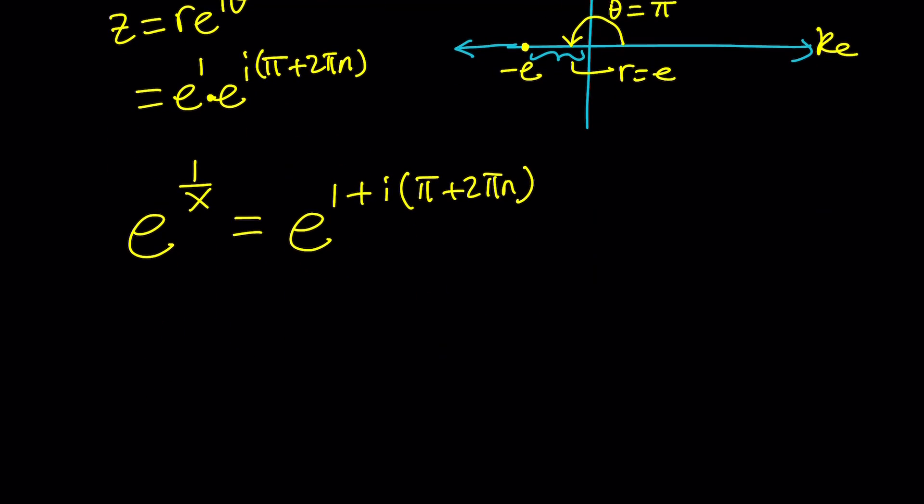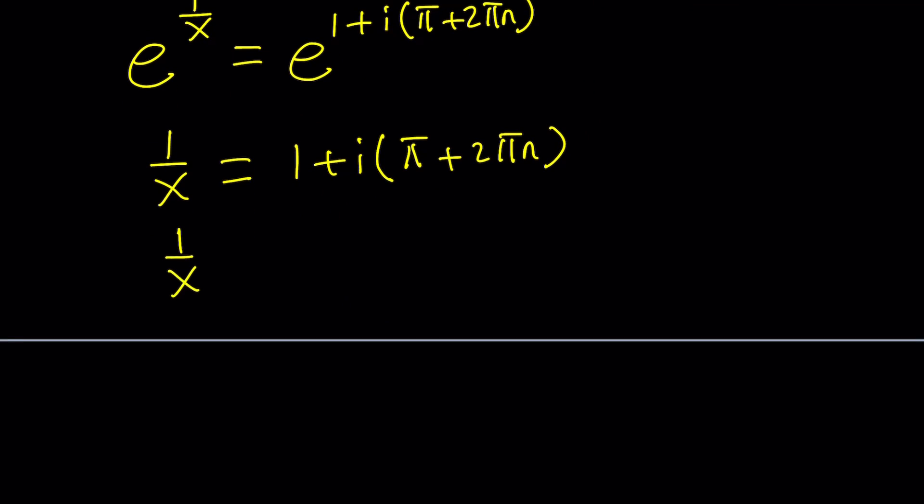Now we can go ahead and do the natural log on both sides. And when we do we're basically going to be getting 1 over x equals 1 plus i multiplied by pi plus 2 pi n. And we're going to be solving for x. Let's go ahead and factor this a little bit. Here we can actually take out a pi. And when we do we're going to get 1 plus 2 n.